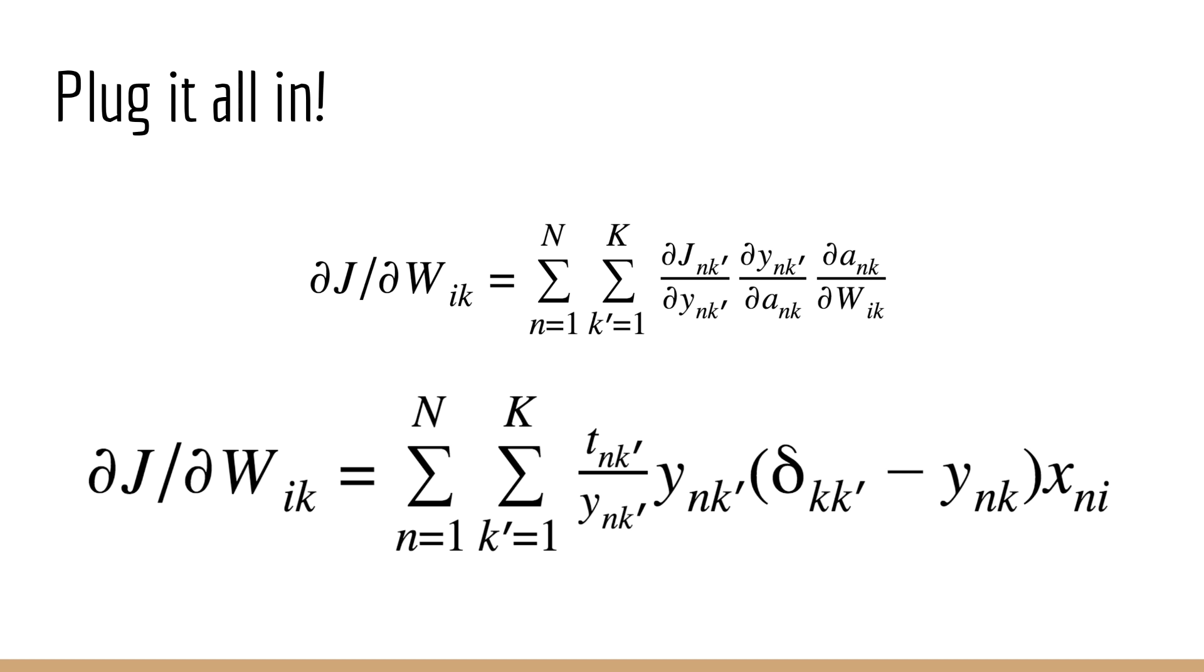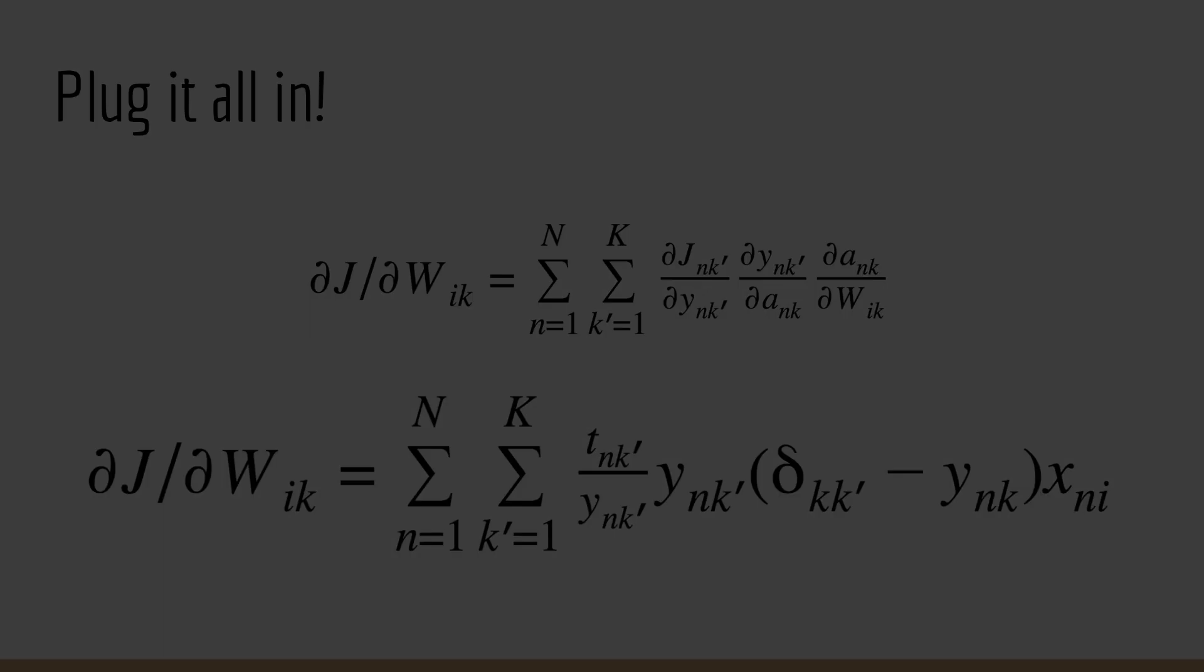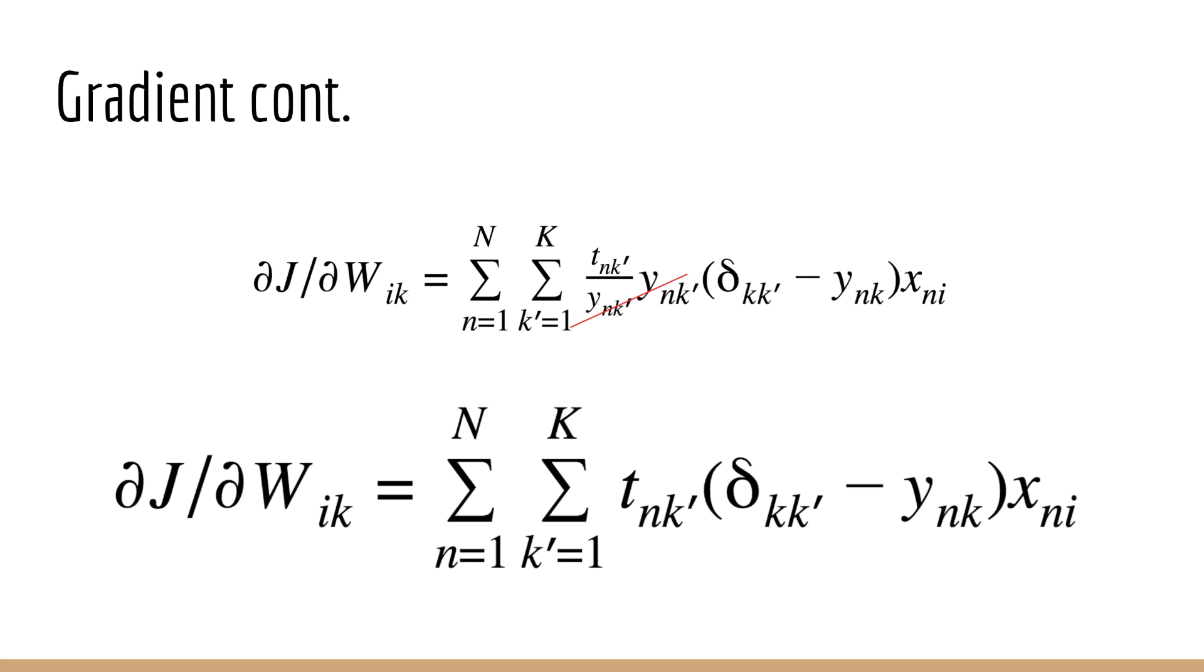The next step is to plug these in for our gradient expression and try to simplify. The first thing we can see quite easily is that y appears both on the top and the bottom, so they cancel out. Unfortunately, we still have this pesky delta function, which ideally wouldn't show up. So the question is, can we get rid of it? Luckily, the answer is yes, but it requires a little bit of logic.